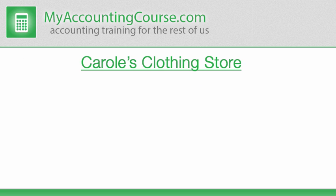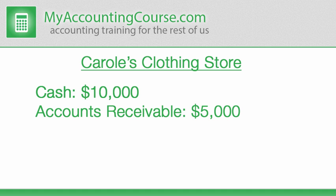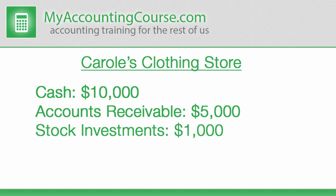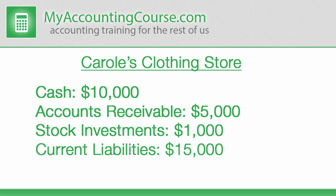Let's take a look at an example. This is Carol's clothing store. Carol has $10,000 in cash, about $5,000 in accounts receivable, $1,000 in stock investments, and about $15,000 in current liabilities. So Carol has $16,000 of quick assets and $15,000 of current liabilities.